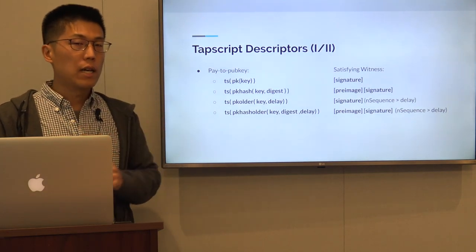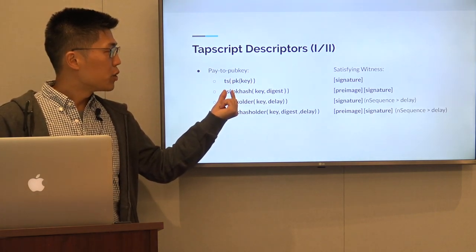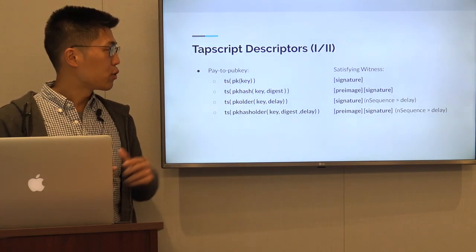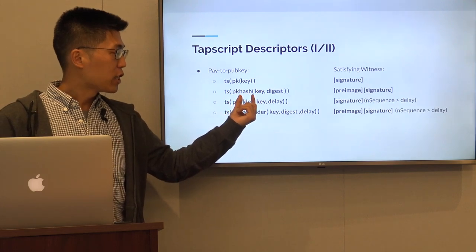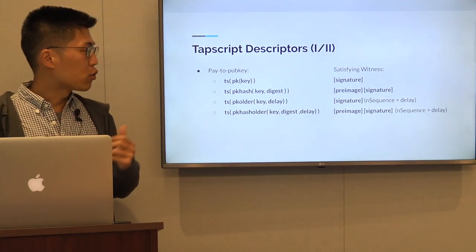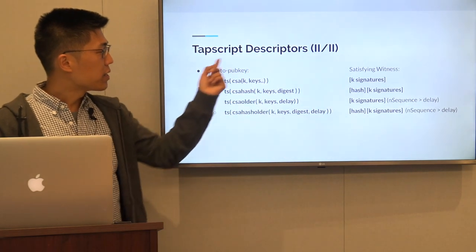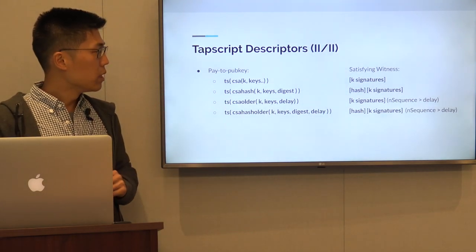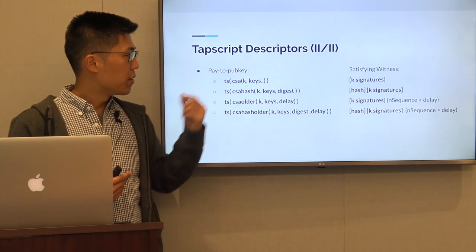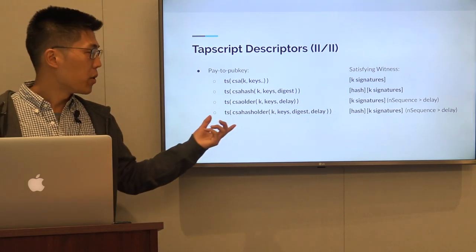In this workshop we propose several types of descriptors to describe tapscript outputs. We have a tapscript tag which encapsulates different types of tapscript descriptors. The most basic is a public key descriptor. We can combine a public key with a hash lock, or combine it with delays — so pk hash older expresses a descriptor with a public key, a hash lock, and a delay lock. We also provide the same descriptors for check sig add multisig outputs: the most basic is a k-of-n multisig using check sig add with a threshold and the various keys. We can combine that locking condition with a hash lock, a delay, or both.